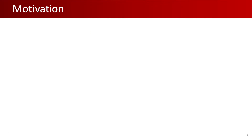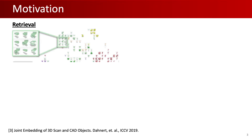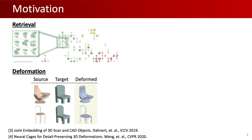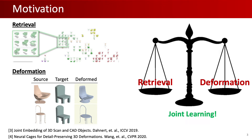Recent works either propose to directly retrieve a high-quality 3D model from a database and deform it to match a target. However, prior methods largely focus on one of the two complementary problems separately. We argue that both retrieval and deformation should be equal citizens, that is, learned jointly.